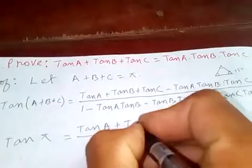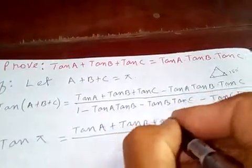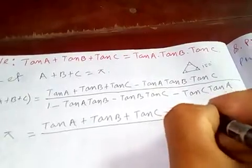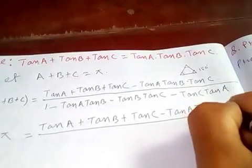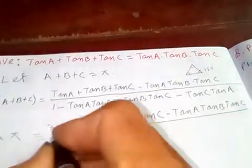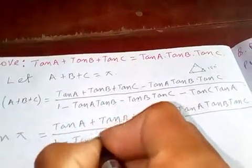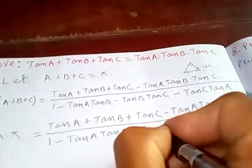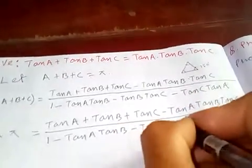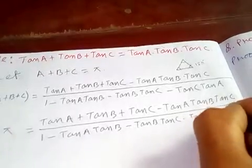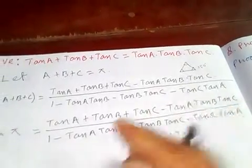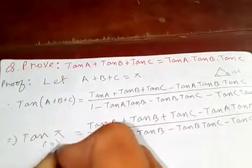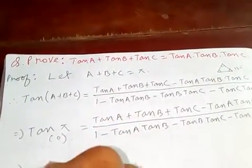So tan A plus tan B plus tan C minus tan A tan B tan C over 1 minus tan A tan B minus tan B tan C minus tan C tan A. And we know tan of 180 degrees or π is just 0, which equals 0.